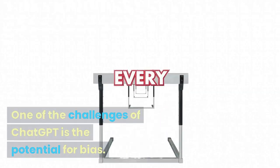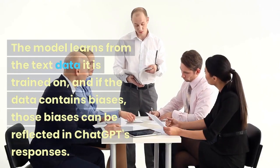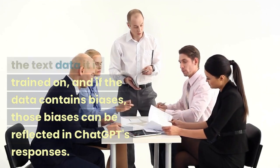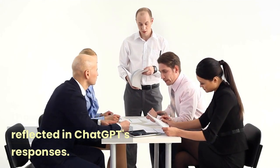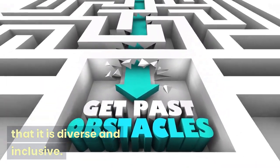One of the challenges of ChatGPT is the potential for bias. The model learns from the text data it is trained on, and if the data contains biases, those biases can be reflected in ChatGPT's responses. This means that we need to be mindful of the data we use to train ChatGPT and ensure that it is diverse and inclusive.